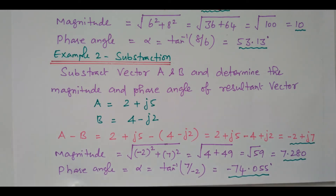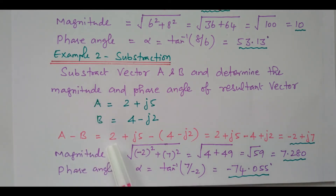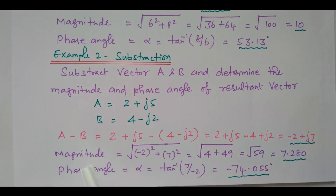Then we find the phase angle: tan inverse imaginary term by real term, B by A — 7 divided by minus 2 — so that is minus 74.055 degrees. So here two vectors are subtracted easily with the rectangular form. From that, we calculated magnitude and phase angle also.